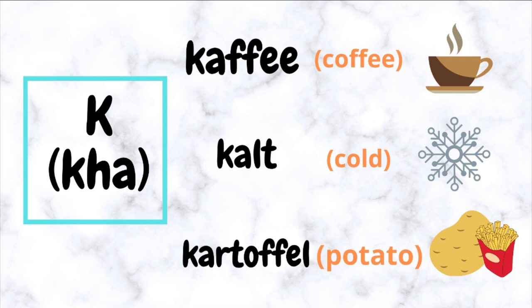K (Kha) — for example: Kafe, Kalt, Kartoffel.